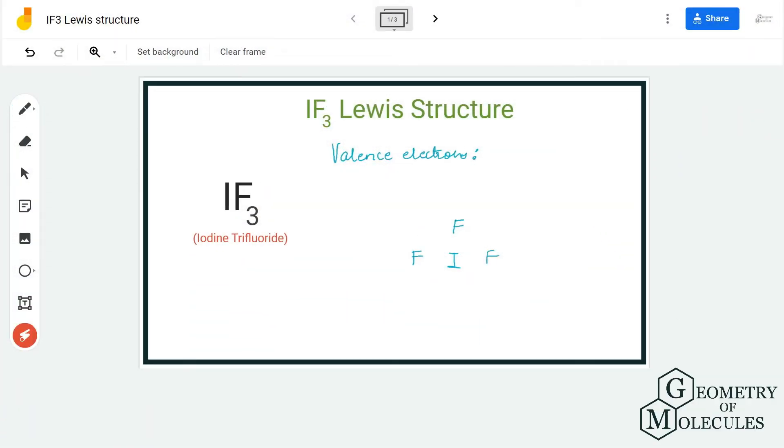Hi guys, welcome back to our channel. In today's video we are going to determine the Lewis structure for iodine trifluoride, which has the chemical formula IF3. To determine its structure, we are first going to look at the number of valence electrons.